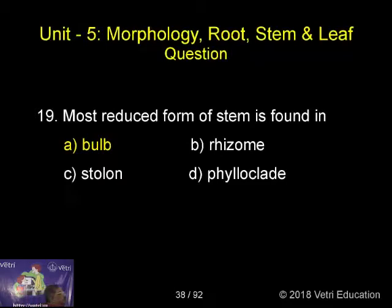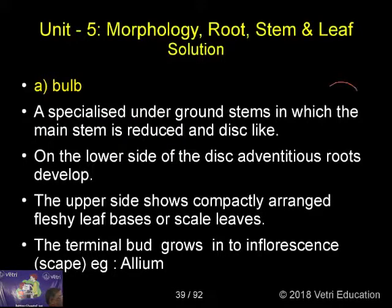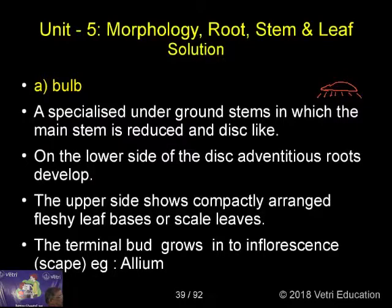Bulb. A specialized underground stem in which the main stem is reduced to a disc-like structure. This is the stem. Below, you can have adventitious roots. And at the center you can have a terminal bud.